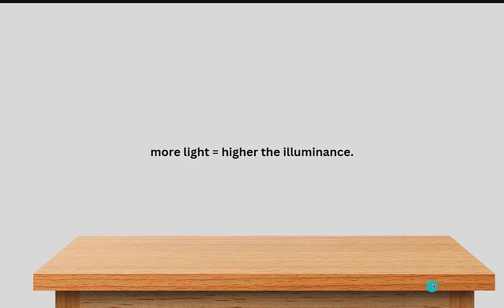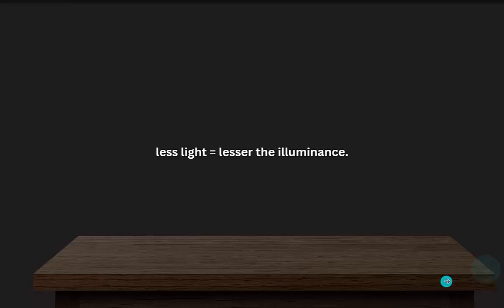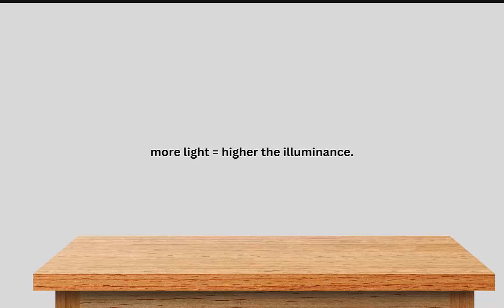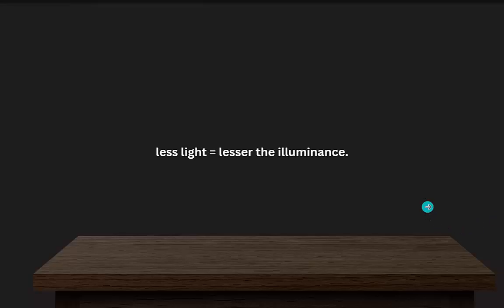Let's go back to the same example of the table top. Here I have more light — the surface of the table has a good amount of light falling on it, so I have higher illuminance. If the light falling on the surface is less, then the illuminance is lesser. More light means higher illuminance; less light means lower illuminance. To summarize: illuminance is the amount of light falling on a surface.